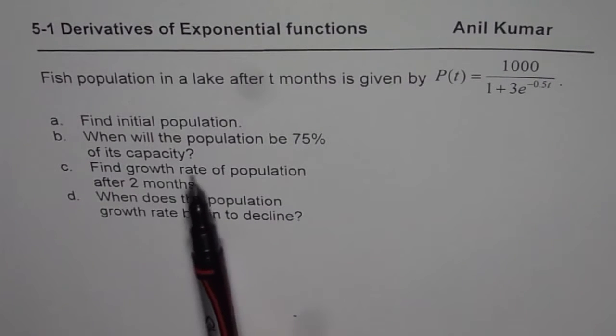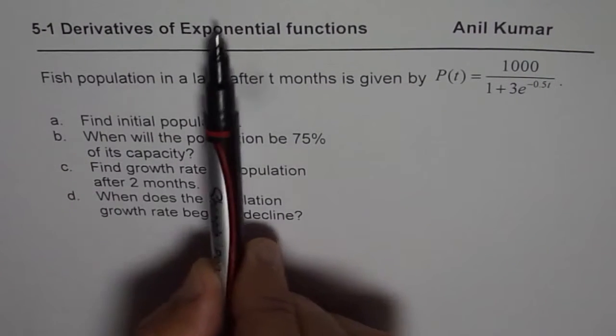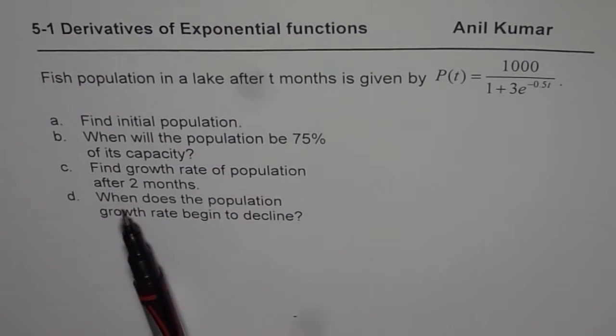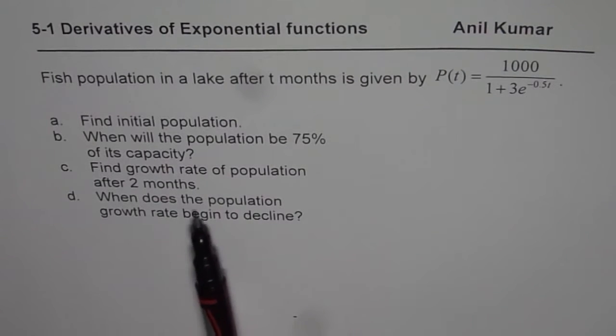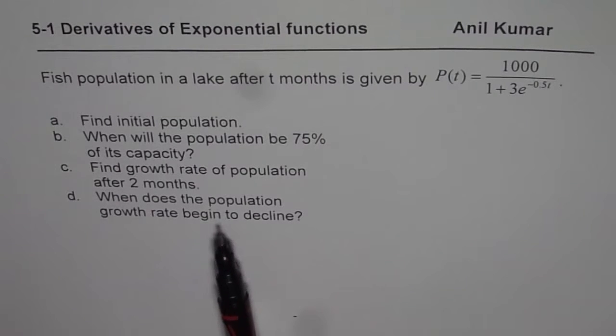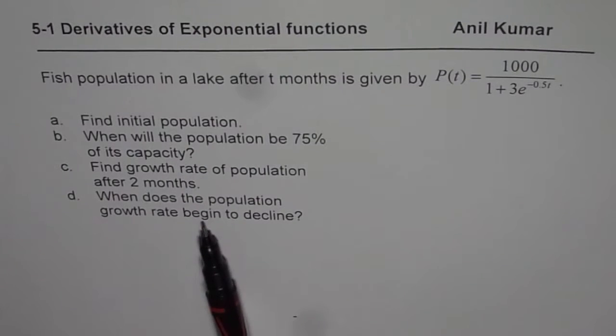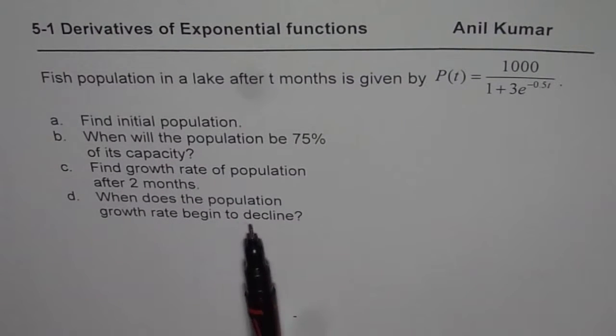And c is growth rate, that means derivative of exponential function. And part d, when does the population growth rate begin to decline? So what do you think is the solution of this? That is analyzing the second derivative.